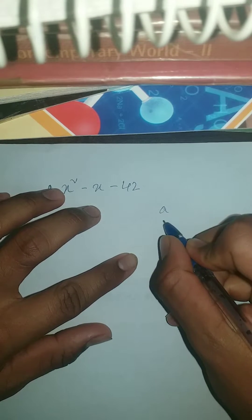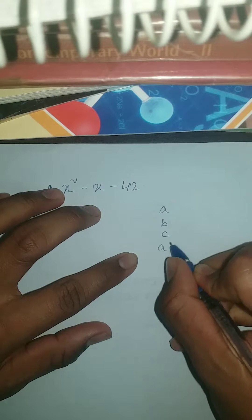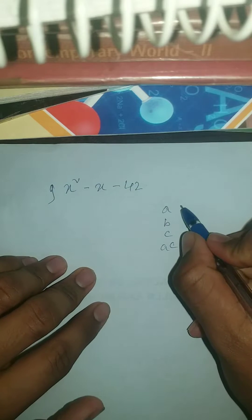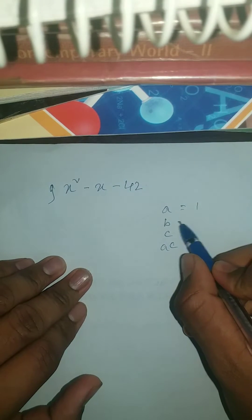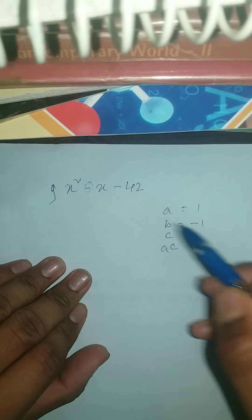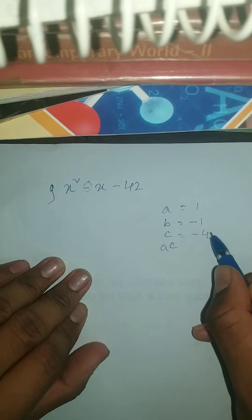So here again we're gonna make columns a, b, c, a×c. What is a? a is 1. b is minus 1, you can see here, and c is minus 42.